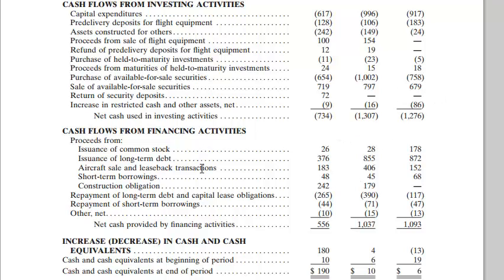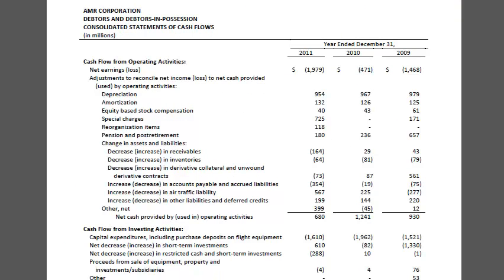Let's look at one other example — American Airlines just before they declared bankruptcy. Here's AMR's cash flow statement for 2011 and the preceding years. They filed for bankruptcy in 2011. Net income was in negative numbers. Looking at free cash flow: they were generating some positive cash from operations, but when you look at their capital expenditures, it wasn't nearly enough to cover them. So they have negative free cash flow, and we need to find where they're getting their money from.